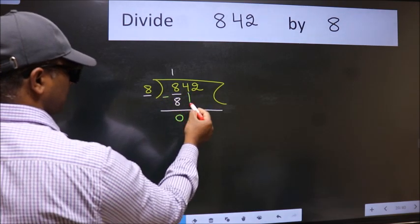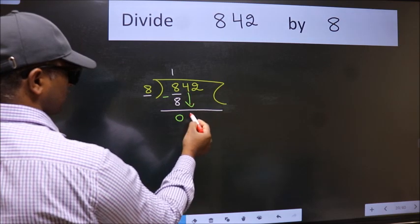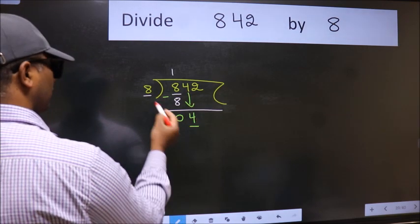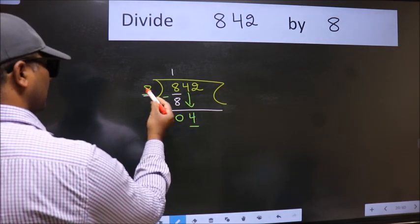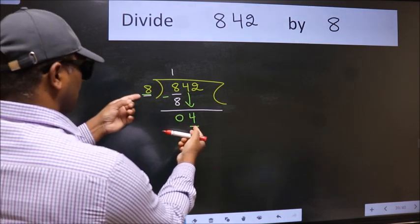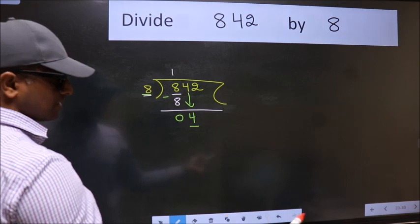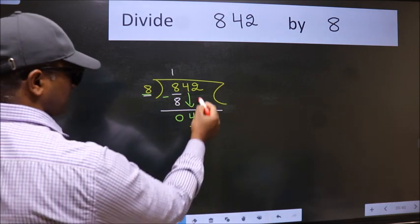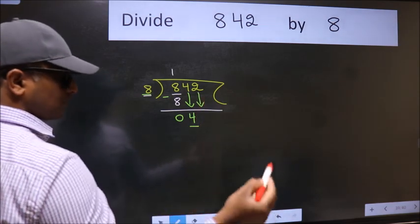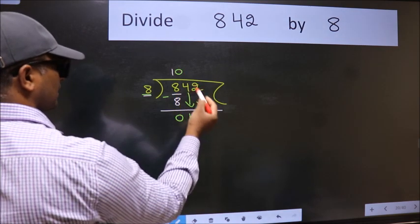After this, bring down the beside number. So 4 comes down. Now here we have 4 and here 8. 4 is smaller than 8, so we should bring down the second number.